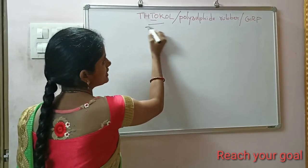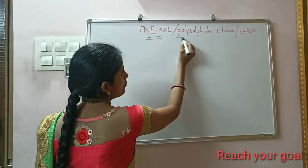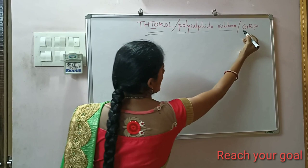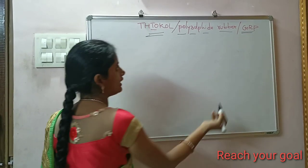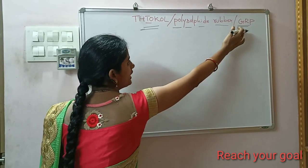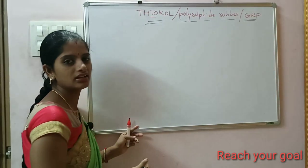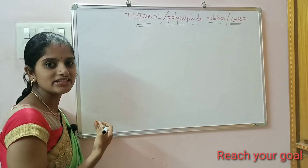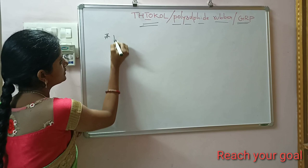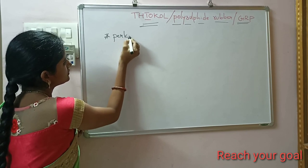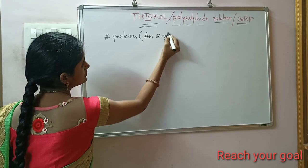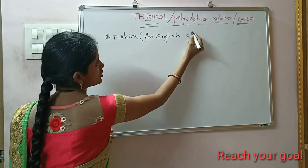Thiokol is also called polysulphide rubber, or government rubber polysulphide. Thiokol was first synthesized by Perkins, an English chemist.